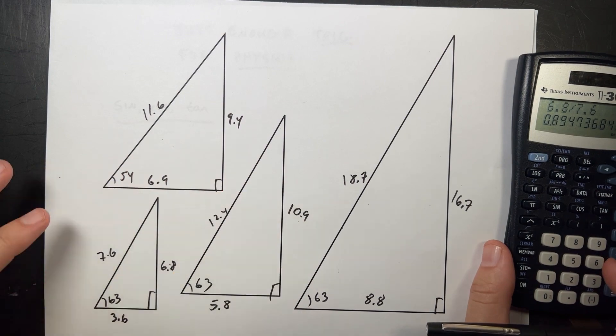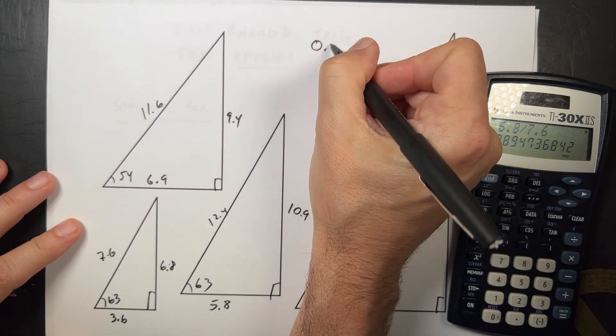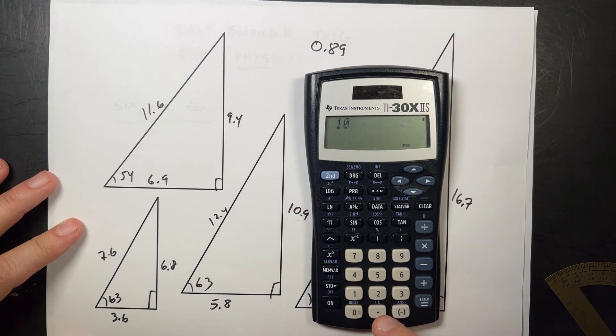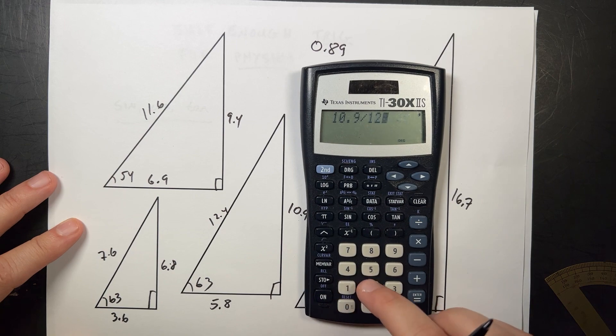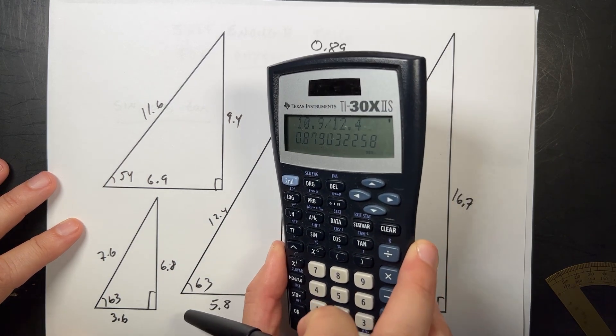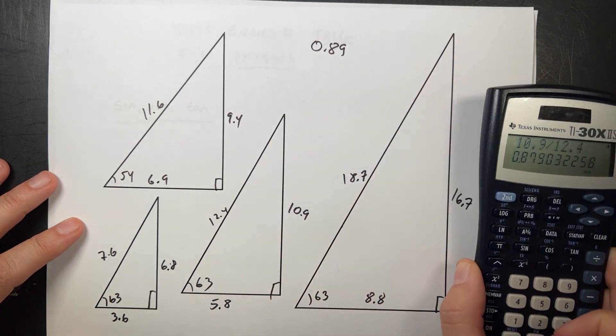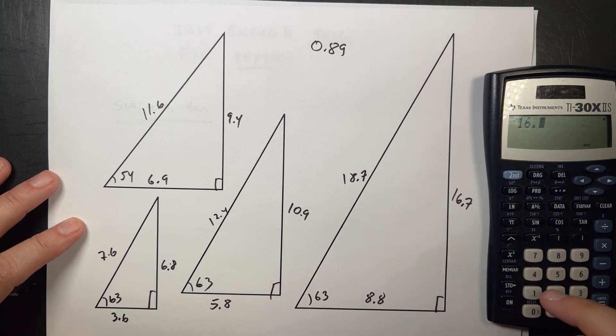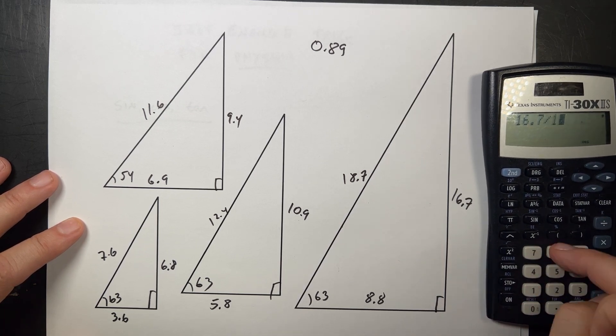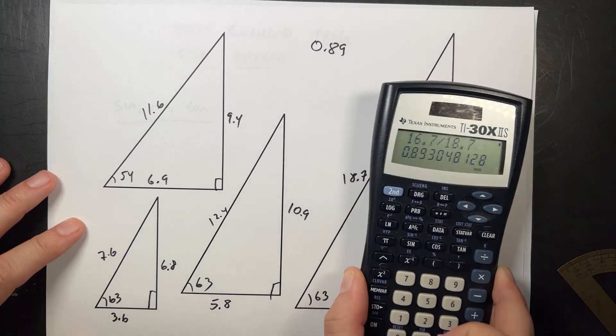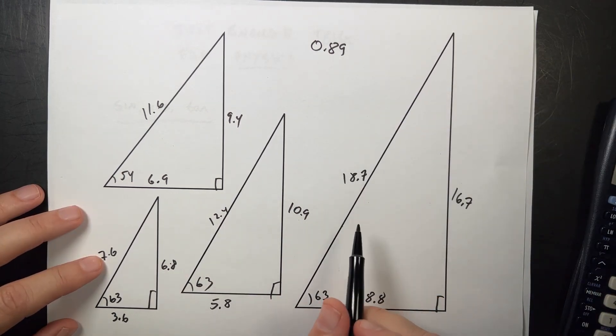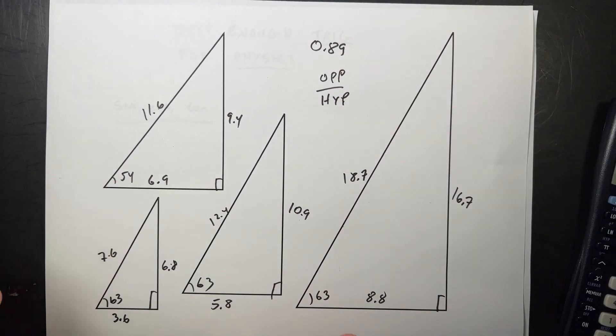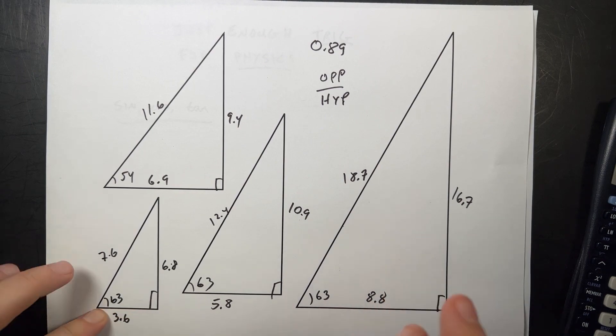So remember that number. 0.89. Now let's do this one. Opposite, 10.9 divided by 12.4 equals 0.88. Close, very close. And now let's do this one. 16.7 divided by 18.7, 0.89. So all of these triangles have the same opposite over hypotenuse. They all have the same. It doesn't matter how big it is. It depends on, because they're all similar triangles, they have similar ratios.